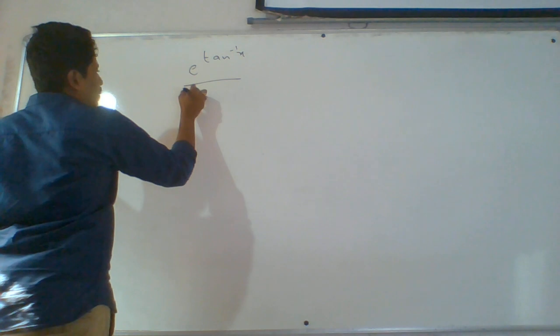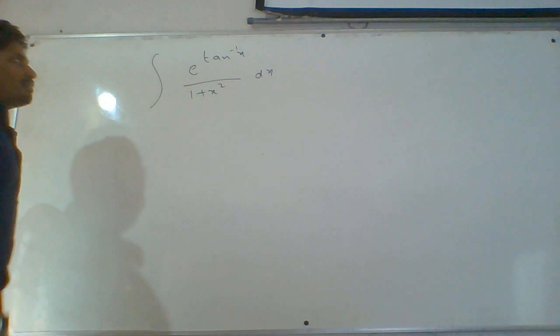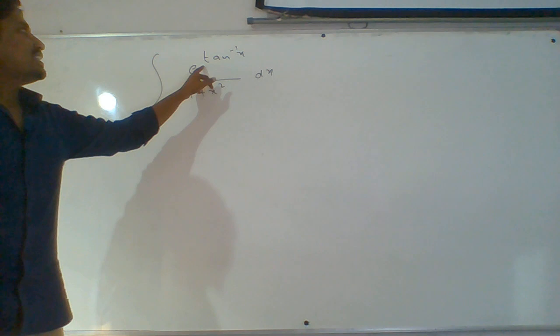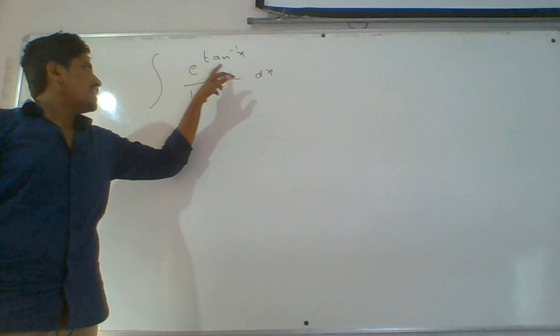Integral of e power tan inverse x by 1 plus x square dx. If you are thorough with derivative formulas, it is easy to guess what to consider as t. If we consider tan inverse x as t, we will get 1 by (1 plus x square) dx, so this total can be written as dt, and the integral becomes e power t.